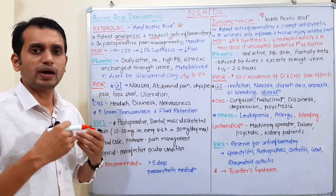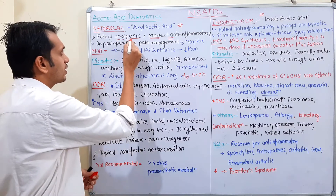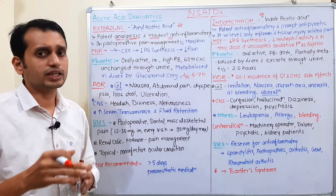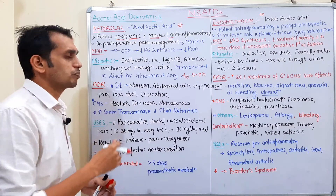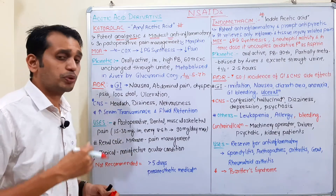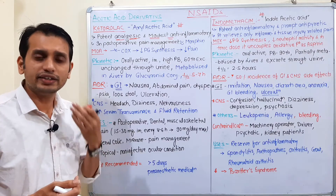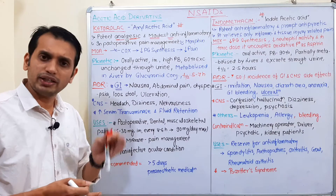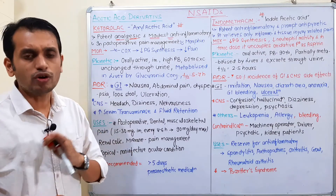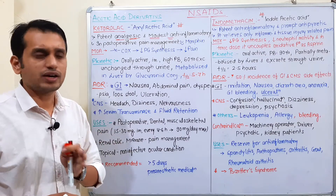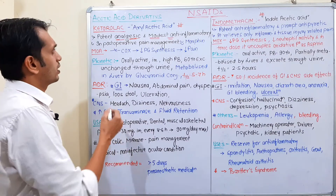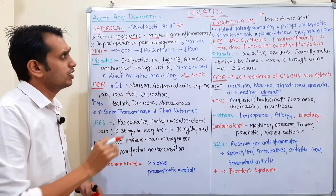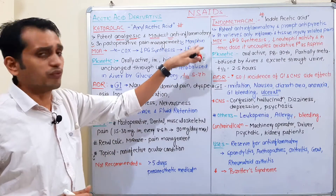Because of its strong analgesic action, ketorolac is preferred as an analgesic drug — used for pain and fever. It is used in post-operative pain, dental surgery pain, and similar conditions via the oral route or by IM or other parenteral routes. In post-operative pain management, it is considered equivalent to morphine.